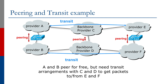Provider A can reach all of B, C, D, E, and F through their link to C — it's the job of C to work out how to do this for them. Similarly, B is buying transit from D to reach the rest of the internet. Now let's say A and B are geographically close to each other. If there's a reasonable amount of traffic from provider A's customers to provider B's network and vice versa, then the two providers can decide to peer with each other at a local internet exchange point. This means that the traffic between A and B flows directly, saving them both money on their respective transit links.